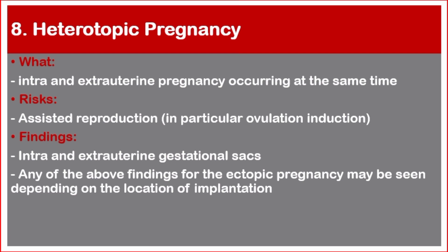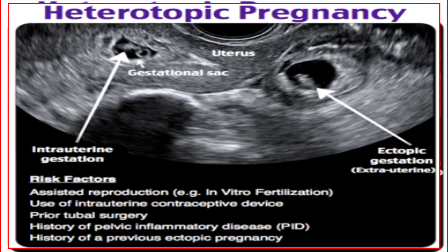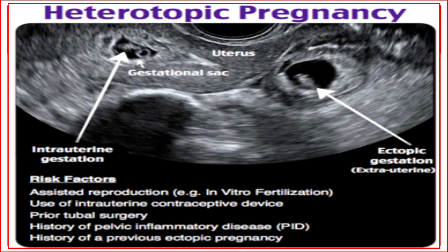Number eight: heterotopic pregnancy — intra- and extra-uterine pregnancy occurring at the same time. Risk factors include assisted reproduction such as IVF, use of an intrauterine contraceptive device, prior tubal surgery, history of pelvic inflammatory disease, and history of a previous ectopic pregnancy. Ultrasound findings: intra- and extra-uterine gestational sac; any of the previously described ectopic findings may be seen depending on the location of implantation.